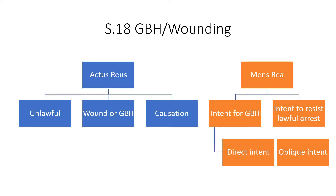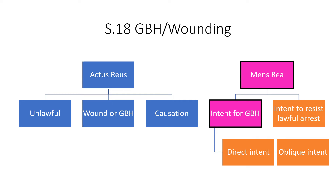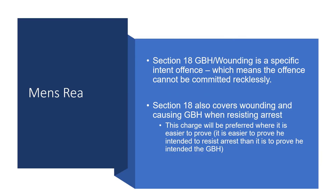Once you're familiar with the actus reus — which is pretty much the same as for section 20 GBH — if you're unsure which level of GBH applies, you need to look to the mens rea. The mens rea of section 18 requires either intent for GBH or intent to resist lawful arrest. Importantly, it is a specific intent offence, so recklessness will not suffice — section 18 GBH or wounding cannot be committed recklessly.